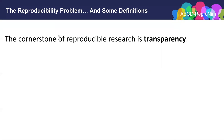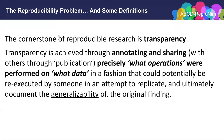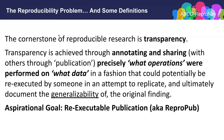In terms of framing our presentation, we like to think about the cornerstone of reproducible research being transparency. Transparency is achieved through annotating and sharing precisely what operations were performed on what data in a fashion that could potentially be re-executed by someone else in an attempt to replicate and ultimately document the generalizability of the original finding. This leads us to an aspirational goal — the idea of the re-executable publication, the ReproPub — where all of the elements are described and published so that the generalization of that observation can be more precisely examined.